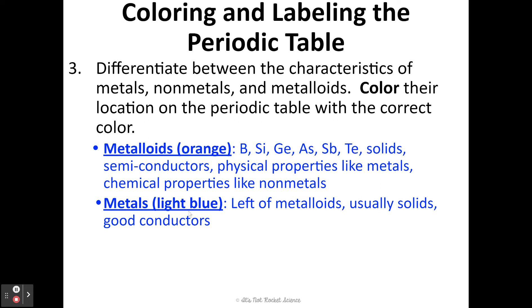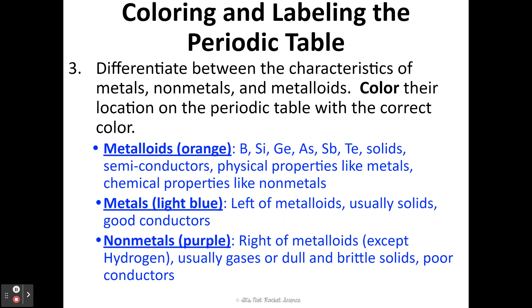Your metals are going to be light blue. The metals are to the left of the metalloids on your periodic table. As you colored your metalloids orange, you kind of created an almost diagonal line of orange color, and then everything to the left of that is going to be light blue for our metals. But be careful — hydrogen is not a metal. Your non-metals are purple, and those are all going to be to the right of the metalloids, except for hydrogen which is all the way over on the left at the top because hydrogen is number one. Metals are solids and good conductors. Non-metals are very poor conductors and usually a gas or a dull, brittle type of solid.